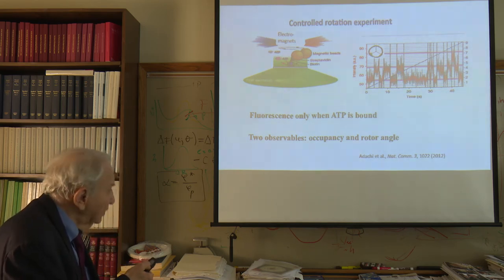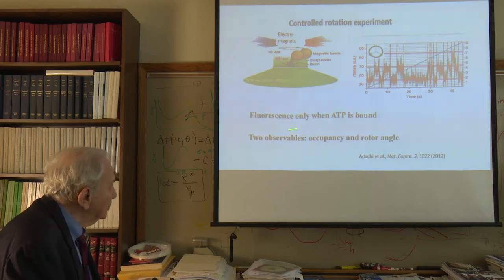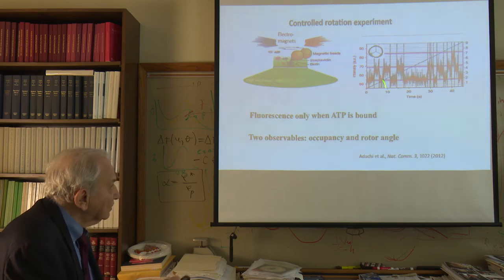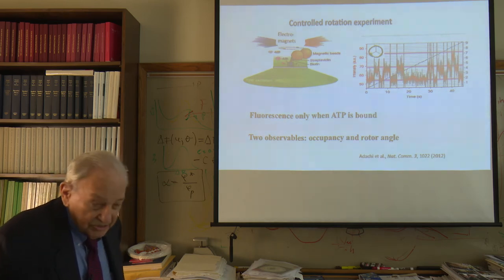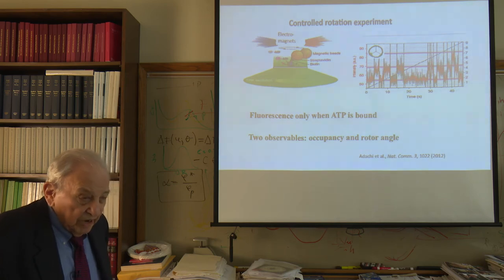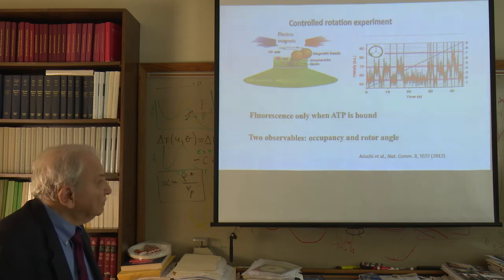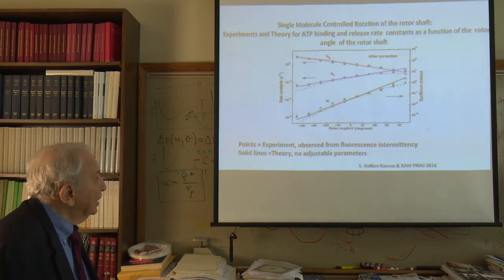And so there are two observables here. One is the occupancy, which you tell by the fluorescence, and the rotor angle at that occupancy. As I mentioned, it's only when the ATP is bound that this modified ATP can fluoresce. Many systems, actually, are of that nature—if you bind them, they will fluoresce, and if you don't bind them, they won't fluoresce. So this is an example of that.